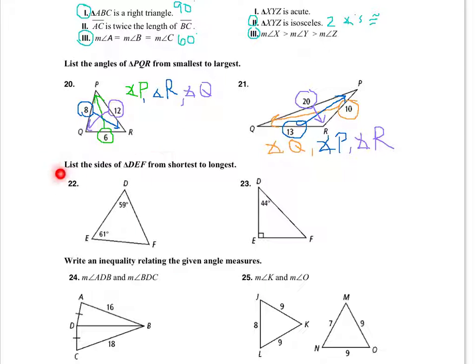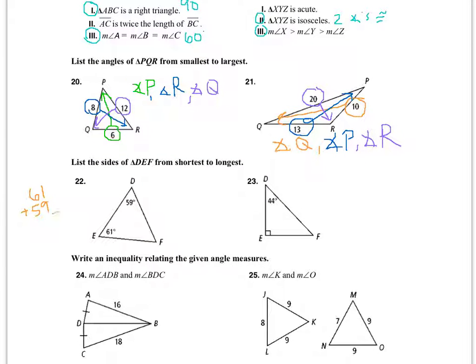Questions 22 and 23 ask us to list the sides from shortest to longest, given angle measures. For question 22, I don't have all three angles — I'm given 61 degrees and 59 degrees. Adding those gives 120 degrees, and subtracting from 180 degrees gives a third angle of 60 degrees.